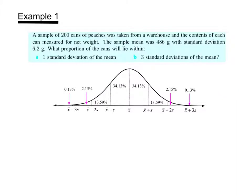Let's look at an example problem. We have a sample of 200 cans of peaches taken from a warehouse, and the contents of each can were measured for net weight. The sample mean was 486 grams with a standard deviation of 6.2 grams. We're asked: what proportion of the cans would lie within one standard deviation of the mean, and within three standard deviations of the mean?